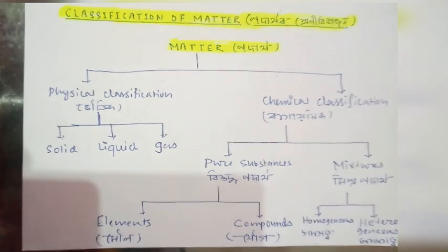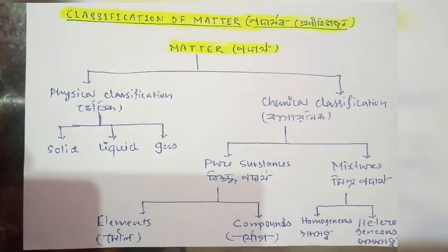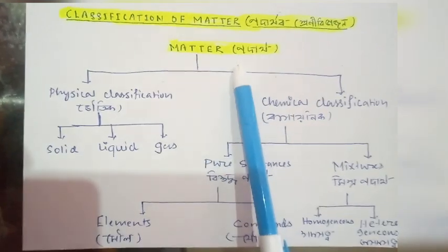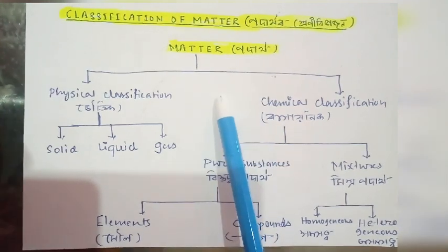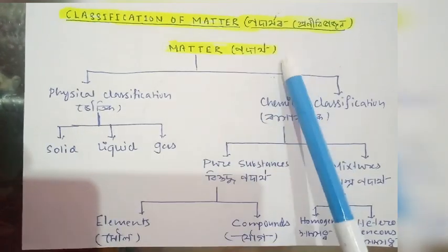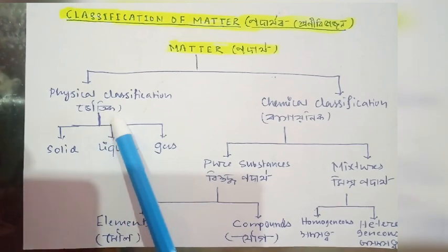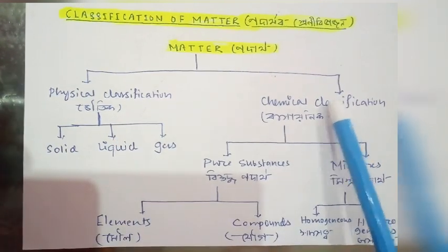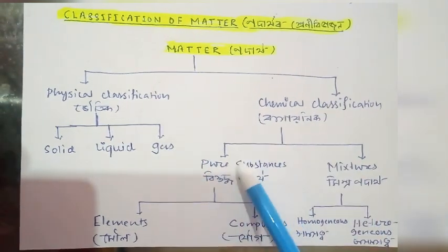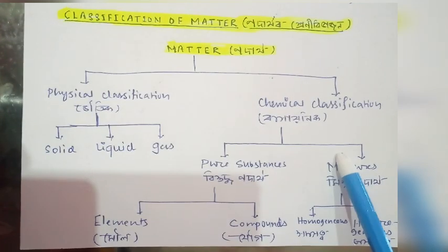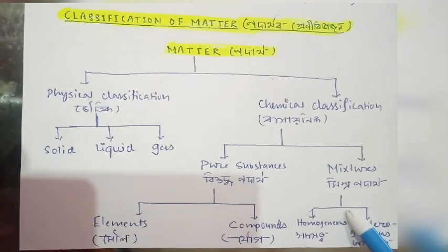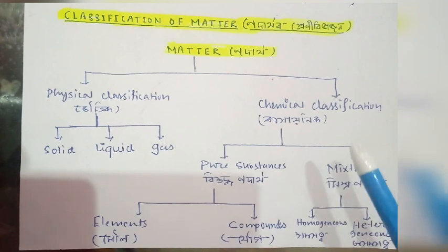Matter is classified in two ways: physical classification and chemical classification. Physical classification gives us three states — solid, liquid, and gas. Chemical classification divides matter into pure substances and mixtures. Mixtures can be further divided into homogeneous and heterogeneous mixtures. More details will be shown in the next class.